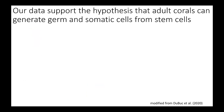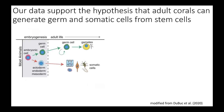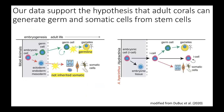We believe this data supports the hypothesis that adult corals can generate germ and somatic cells from stem cells. If corals were like most animals, we would expect to see germline mutations and mutations in the soma that were not inherited — but we don't just see that. We also see mutations that appear in the soma as well as the gametes, the things we were calling inherited somatic mutations. I would argue that they're probably not actually inherited somatic mutations, but inherited i-cell mutations, in which a mutant i-cell gave rise to both germ cells that produce gametes as well as somatic mosaics.